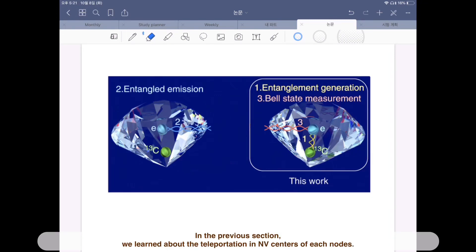In the previous section, we learned about the teleportation in NV centers of each node. A photon is emitted from one node, which is left, leaving an electron entangled with the emitted photon. The success of the photon storage in the other node, which is right,